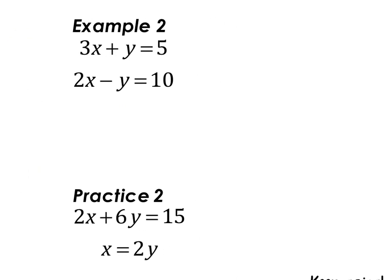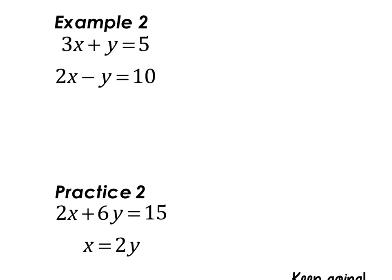Example two: three x plus y equals five; two x minus y equals ten. The first thing I need to do is set up one of the equations to be in y equals or x equals. Since both x's have a coefficient, I'm going to solve for y. I'll pick the first equation so that I have a positive y. When I subtract three x from both sides, I get y equals negative three x plus five. Now notice in the second equation there is a subtraction sign before y, so pay attention to the signs — that's an easy place to make a mistake.